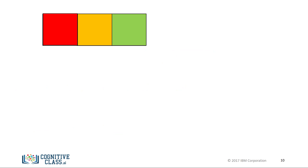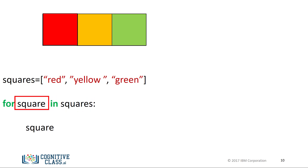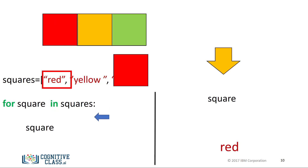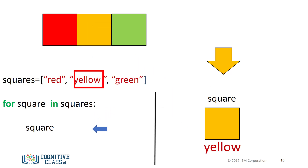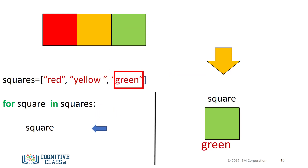We can also iterate through a list or tuple directly in Python — we do not even need to use indices. Here is the list squares. Each iteration, we pass one element of the list squares to the variable square. For the first iteration, the value of square is red. For the second iteration, the value of square is yellow. For the final iteration, the value of square is green.